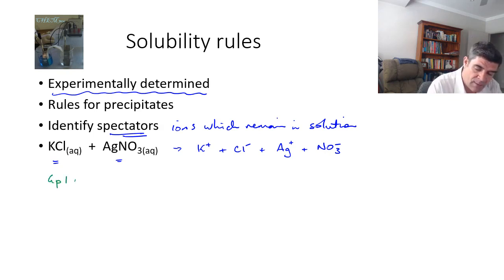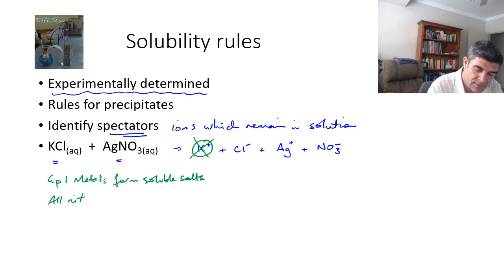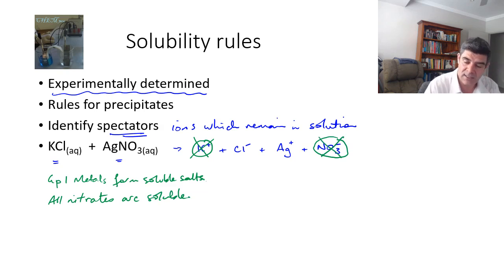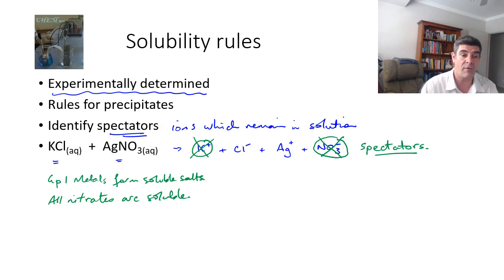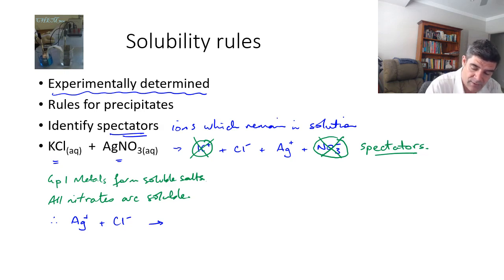One rule to remember is that group 1 metals form soluble salts, so potassium being a group 1 metal will always form something soluble and will not be part of a precipitate. Another general rule is that all nitrates are soluble, so nothing with a nitrate ion will form a precipitate either. These green circled substances are our spectators — they remain in solution. What's left is the silver ion and the chloride ion, and we need to determine from the level of solubility whether a precipitate forms.